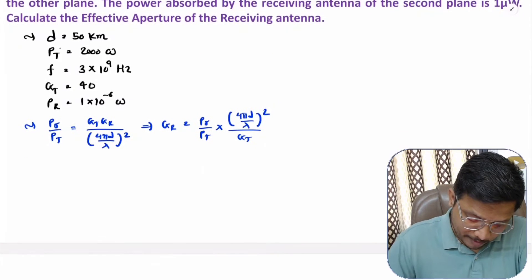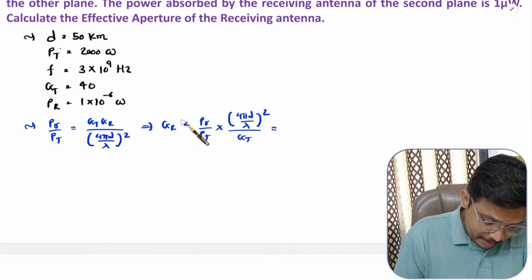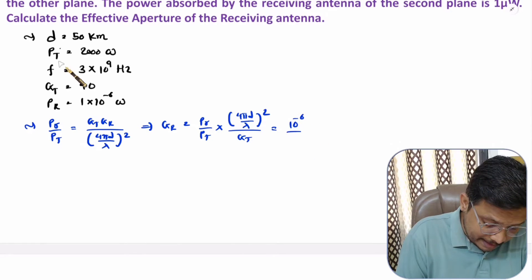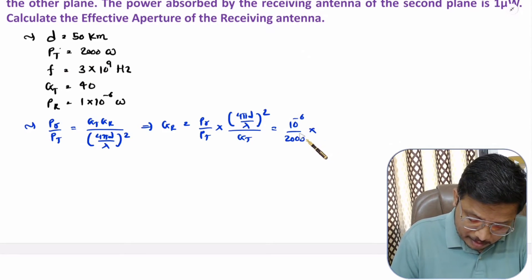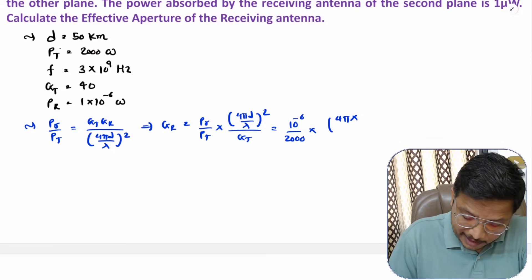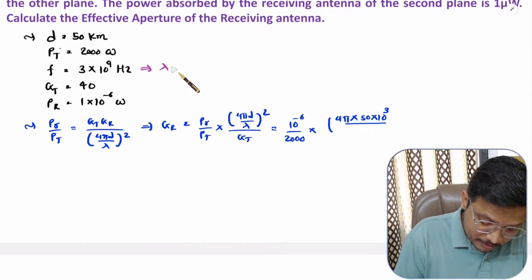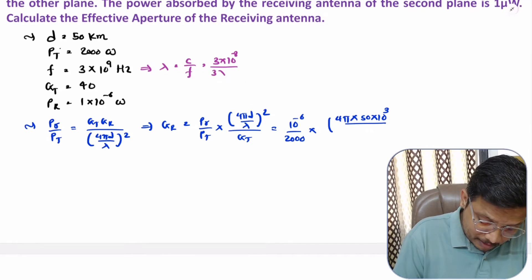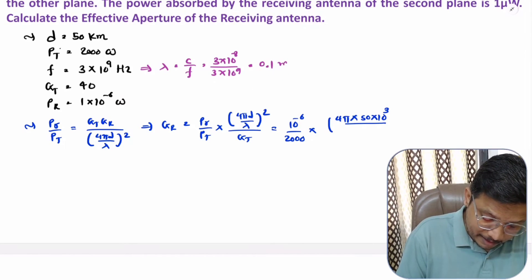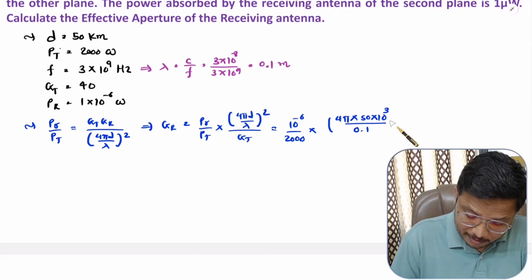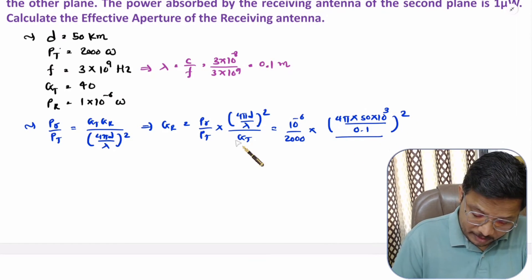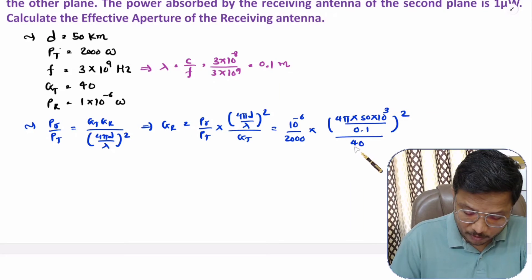Substituting values: Pr = 10⁻⁶, Pt = 2000, d = 50 km = 50 × 10³ m. Lambda is calculated as λ = c/f = (3 × 10⁸) / (3 × 10⁹) = 0.1 meter. Gt = 40.